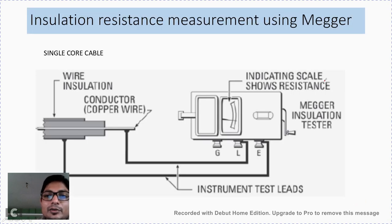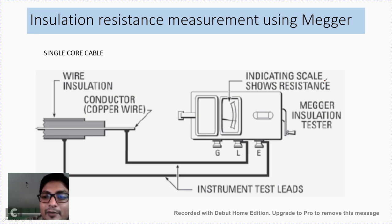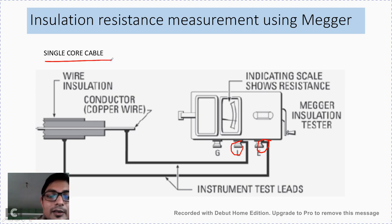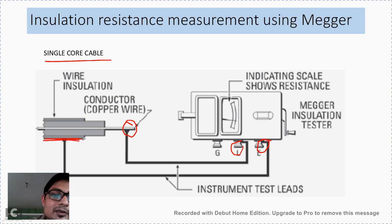The next method is measurement of insulation resistance using a megger. A megger is a hand-operated generator which generates high voltage when the handle is rotated. It has three terminals — line, earth, and guard. For a single core cable, the line terminal of the megger is connected to the conducting part of the cable, and the earth terminal is connected to the metallic sheet on the surface of the insulation.